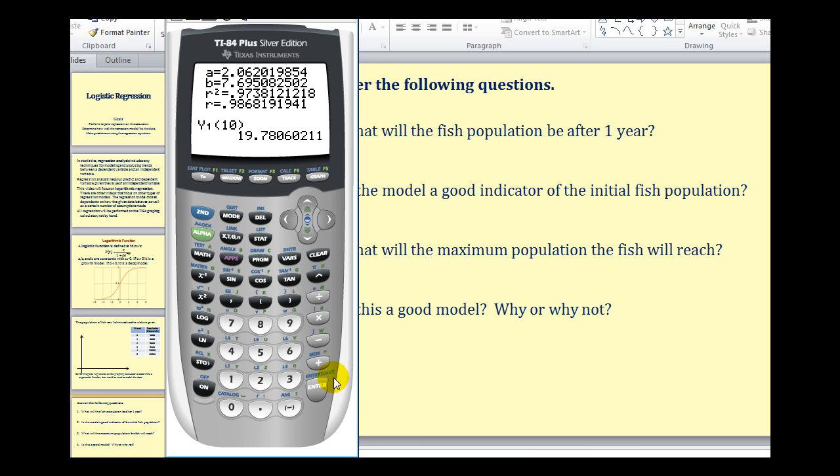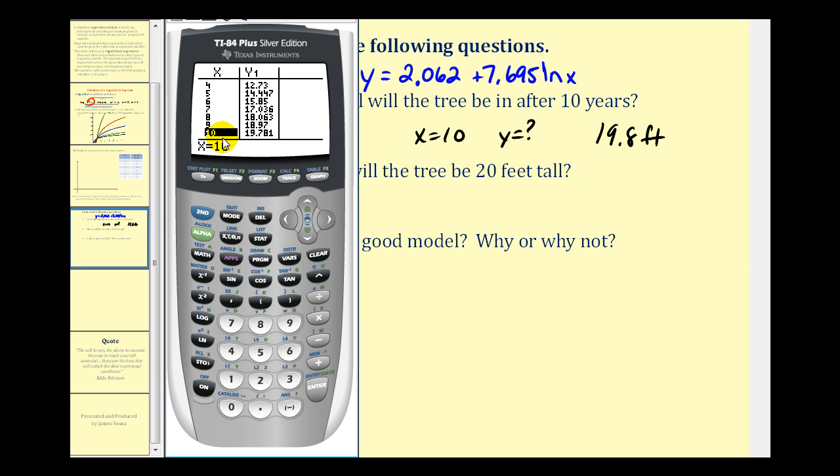Another way to answer this question would be to use the table feature. If we press second window, let's have our table start at zero, increase by ones, and then leave these options as automatic. If we press second graph, now we can just scroll down to x equals 10. Notice how we get the same value we did using the home screen.